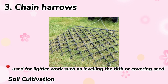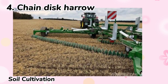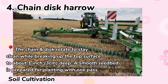Chain harrows are often used for lighter work such as leveling the tilt or covering seed. The fourth is a chain disc harrow — discs attached to chains are pulled at an angle over the ground. These harrows move rapidly across the surface. The chain and disc rotate to stay clean while breaking up the top surface to about 1 inch or 3 cm deep. A smooth seed bed is prepared for planting with one pass.